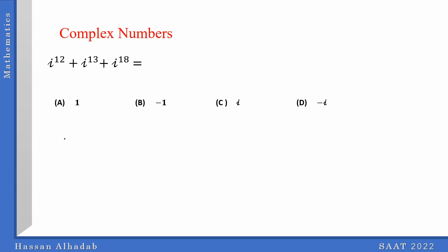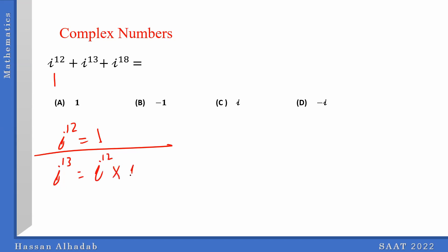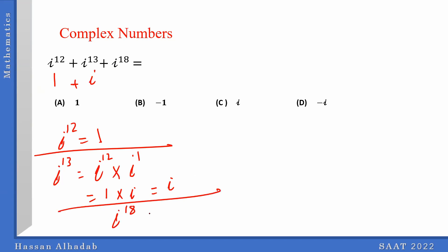For the first one, i to the 12, I know this is going to be 1. For i to the 13, this is i to the 12 times i to the 1 — since 13 is 12 plus 1, this is 1 times i, so the answer is i. For i to the 18, this is i to the 16 times i squared. i squared is negative 1, so i to the 16 is 1, and the answer is negative 1... so the whole thing gives i.